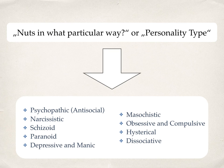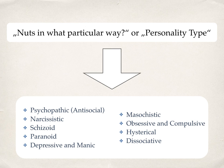McWilliams' 'nuts in what particular way' refers to the personality type. Each of the three mentioned before can be organized with a personality type. Though many personality types often coexist, usually one predominates. You can find paranoid or narcissistic neurotics, as well as schizoid or paranoid psychotics. Depressive borderlines may occur too. As you can already see, what adds to a personality is complex and its formation is multifactorial.